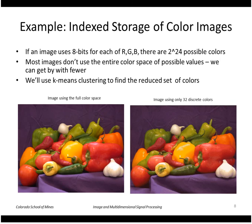Let's look at an example of indexed storage of color images using k-means. Color images are expressed in terms of RGB — red, green, blue. If we use 8 bits for each band, we have 2 to the 24th possible colors. But most images don't use the entire color space, so we might get by with fewer discrete colors. This is where k-means clustering comes in: we can find a reduced set of colors that represent the image fairly well. Here is an input image using the full color space, and here is the same image where we have chosen only 32 discrete colors — it is actually a fairly reasonable approximation.